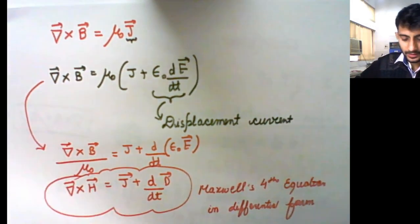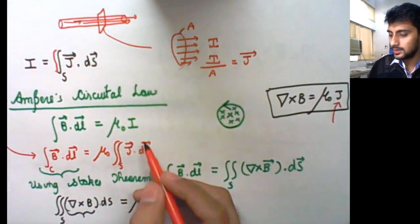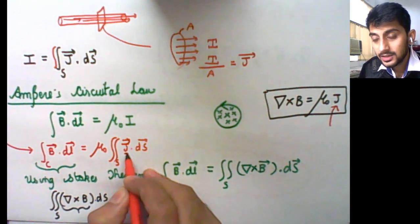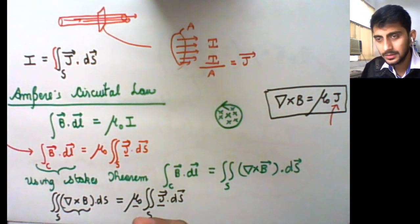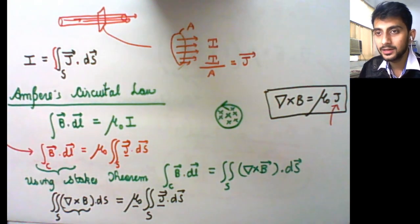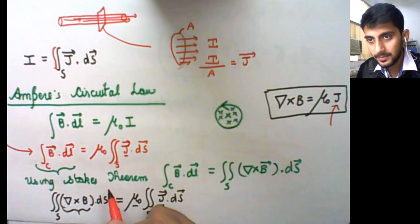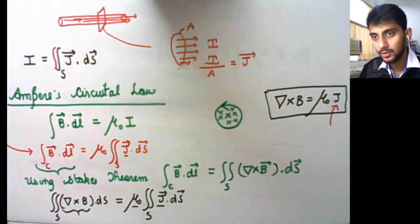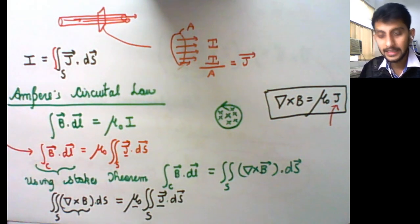If you include in J the displacement current quantity as well, then it will become Maxwell's fourth equation in integral form. You can try writing that on paper and drop me a WhatsApp message, so that I may know that you could write Maxwell's fourth equation in integral form as well.